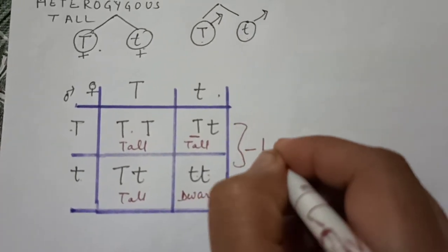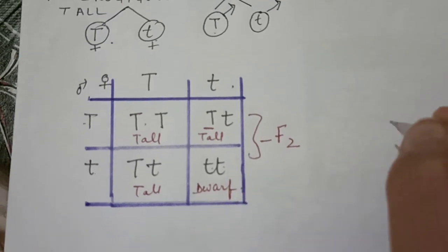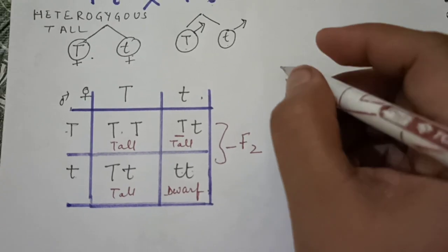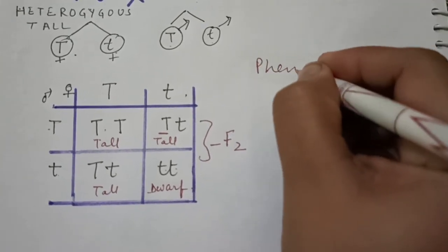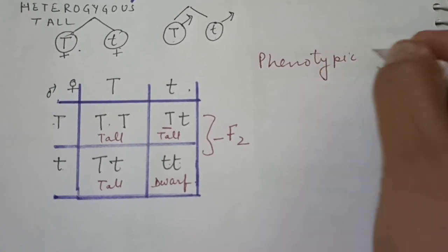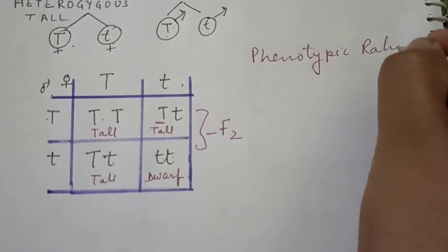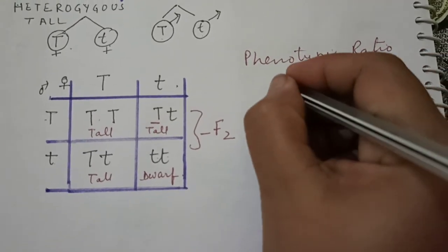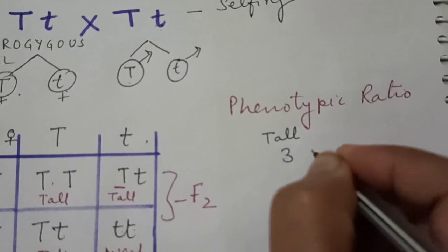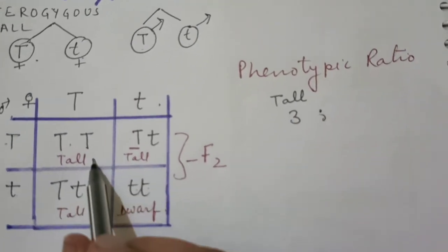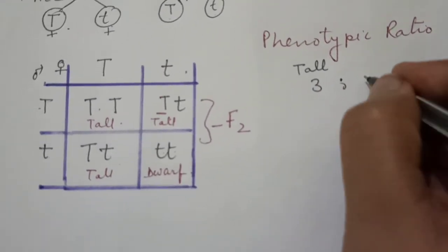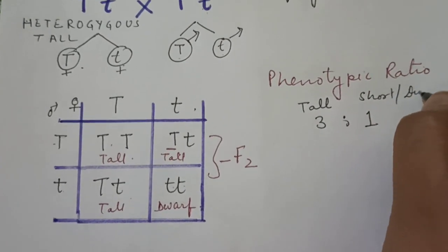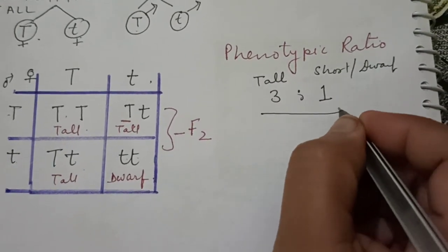So what is the result? The result is to be termed as F2 generation, that means second filial generation. The phenotypic ratio: what is it? This phenotypic ratio means in what way these plants are visible. So as we can see that tall plants are three in number: 1, 2, and 3, and 1 plant is short or you can write as dwarf also. So the phenotypic ratio is 3 raised to 1.